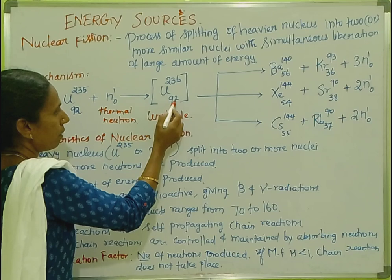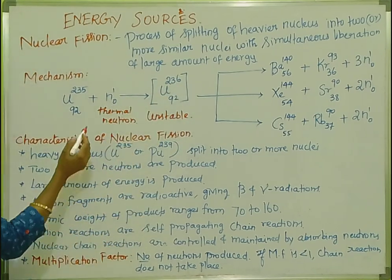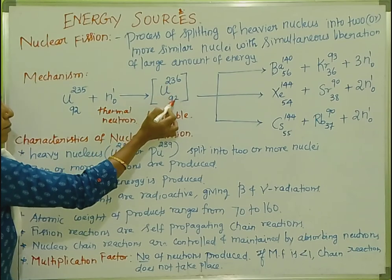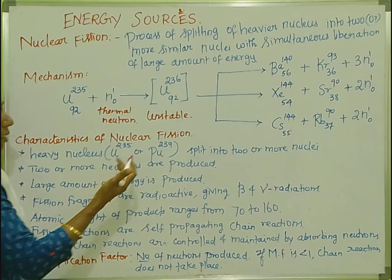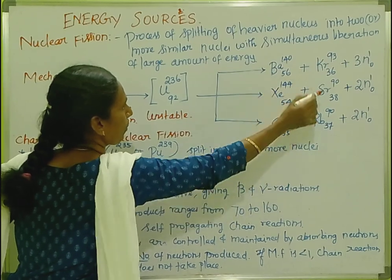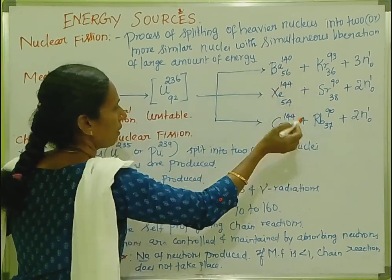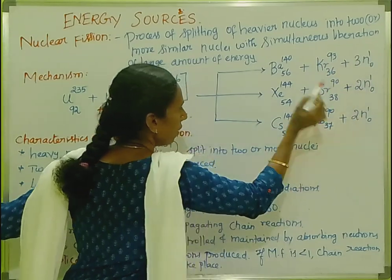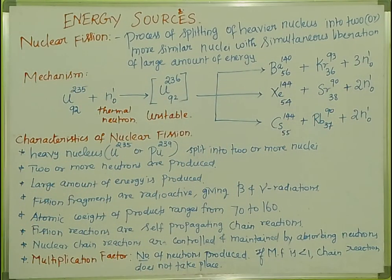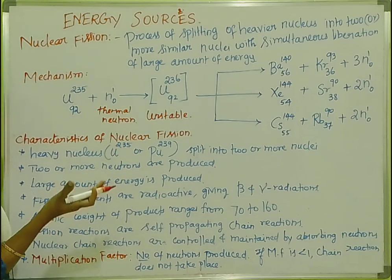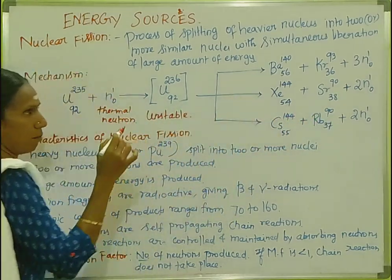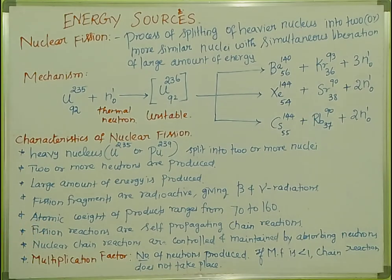This produces unstable uranium-92-236. Unstable uranium-235 becomes unstable, then it splits. Neutrons are produced and energy is released from the nucleus. It splits into two or more similar nuclei, plus neutrons are produced, and a large amount of energy is liberated.